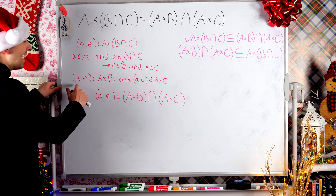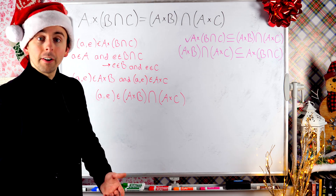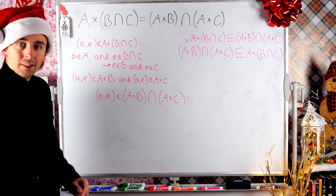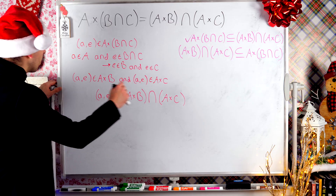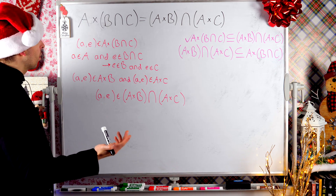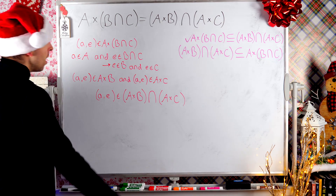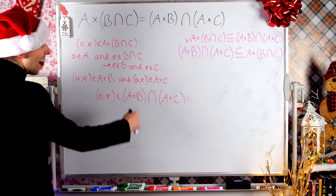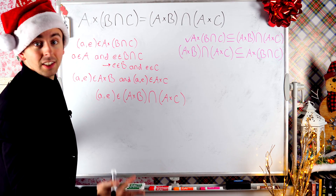If (a, e) is in the set A cross B, by definition of Cartesian product, the element on the left is an element of the set on the left — so little a is an element of big A. Similarly, the element on the right, e, has to be an element of B. So e is an element of B, by definition of Cartesian product. Applying the same logic to A cross C: a is an element of A — we already knew that — and e is an element of C, by definition of Cartesian product.